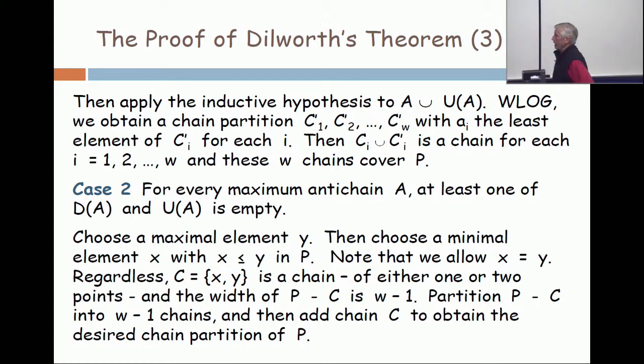But here's the important thing. When you take X and Y away, regardless of whether X equals Y or X is different from Y, in what's left there is no maximum anti-chain of size W. If there were, X would be on the high side and Y would be on the low side, and you've already ruled that out. There is no such anti-chain.